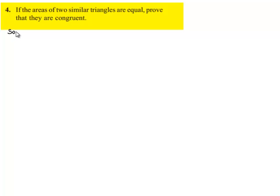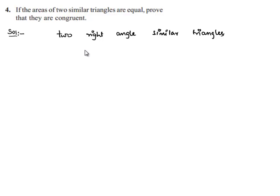Now moving on to the solution, for our simplicity, let us consider two right angle similar triangles, triangle ABC and triangle DEF, which are just similar.